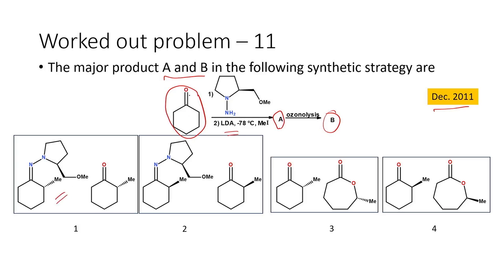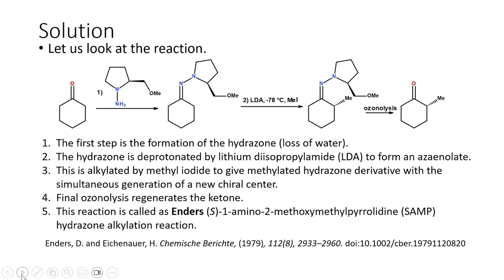Four different combinations are given. In the first two, the carbonyl and hydrazine combine to give an intermediate, which then undergoes alkylation at the alpha carbon; the difference between options 1 and 2 is the stereochemistry of the methyl group attached. In the other two cases, ozonolysis leads to a ring enlargement reaction, similar to Baeyer-Villiger oxidation, giving a lactone ring. We need to determine which actually occurs.